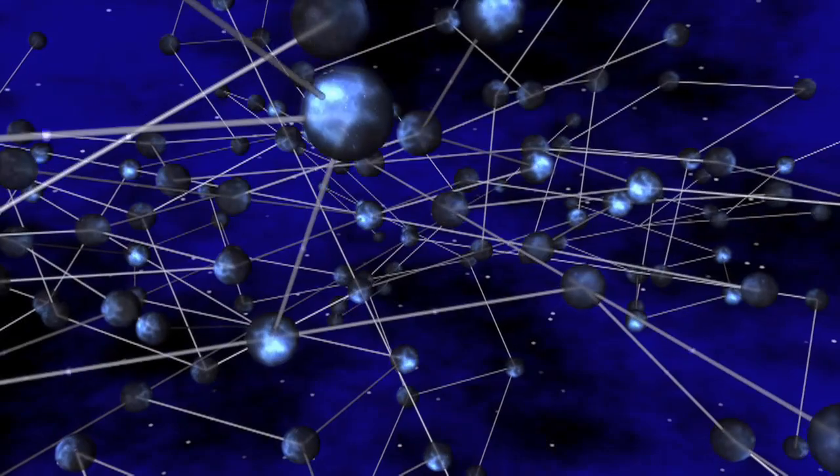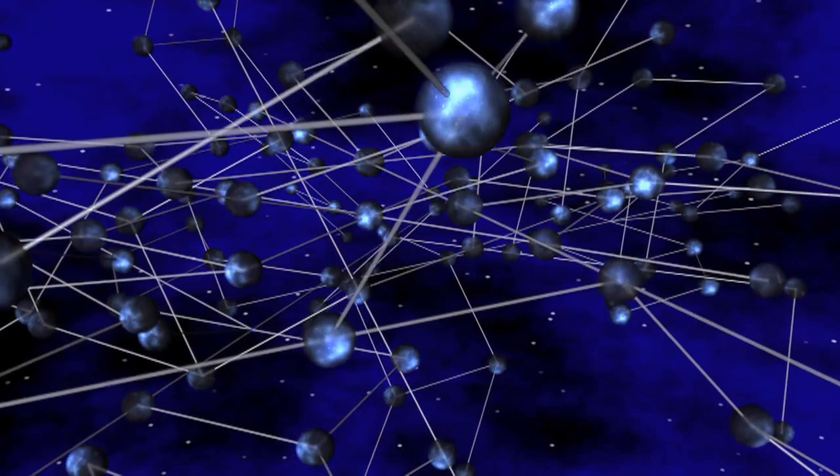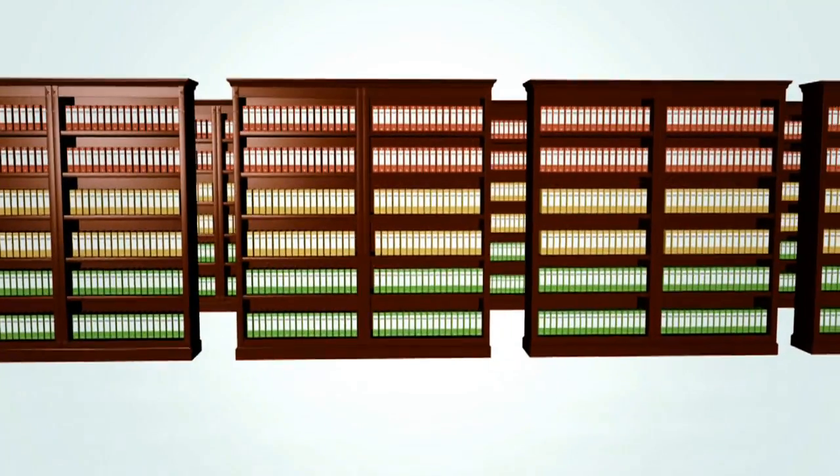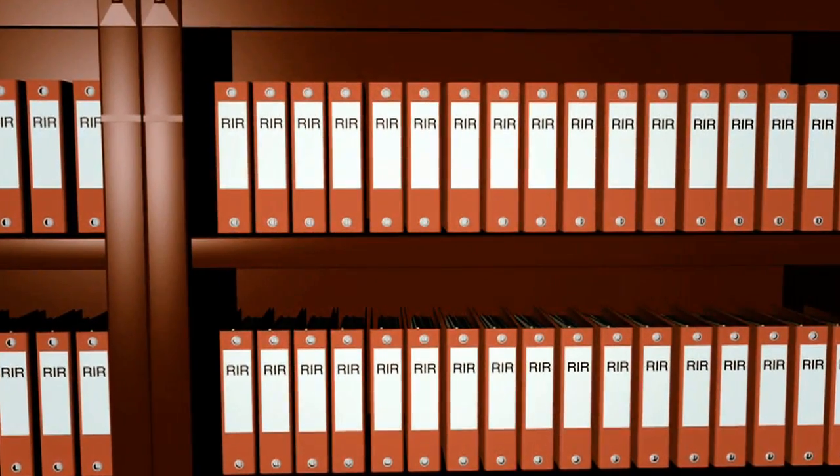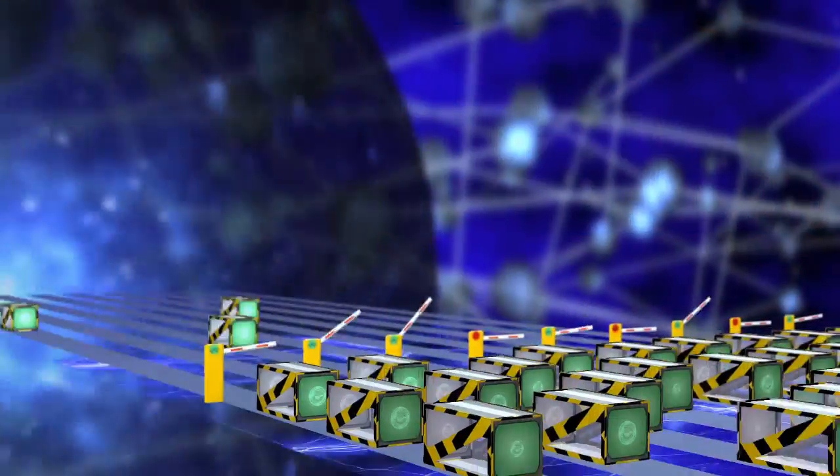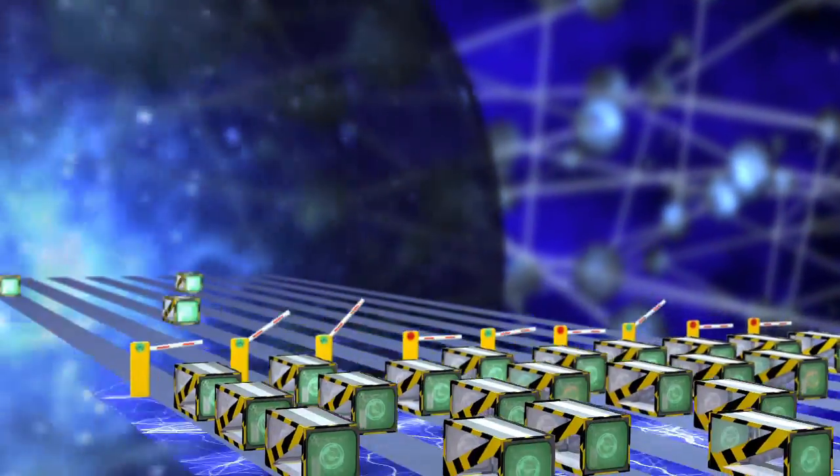So, what can network operators do to prevent this from happening? They can use the public registry to find out what prefixes other networks are supposed to announce, and set up filters to accept only those prefixes and no others.